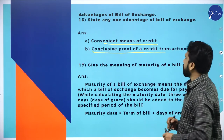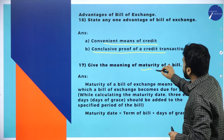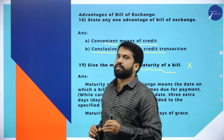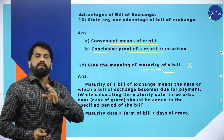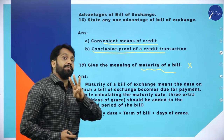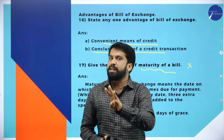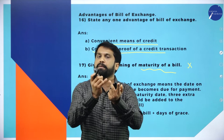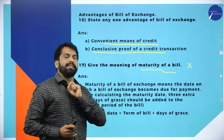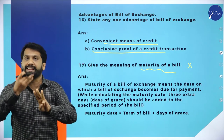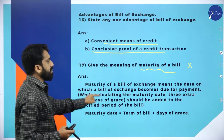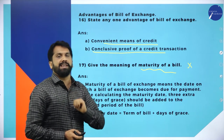Give the meaning of maturity of bill. For example, on 1st January I gave you a document with 3 months' time. The maturity would be April 1st. As I told you, 3 days of grace are added — so 2nd, 3rd, 4th — your maturity date will be the 4th of April.